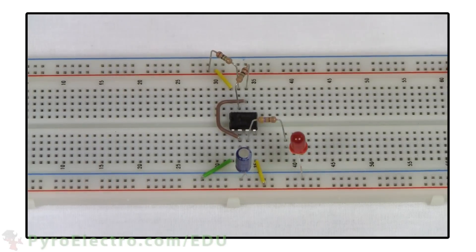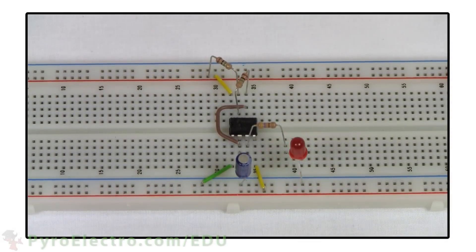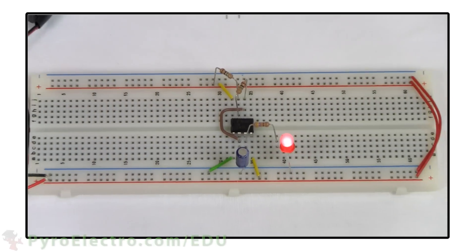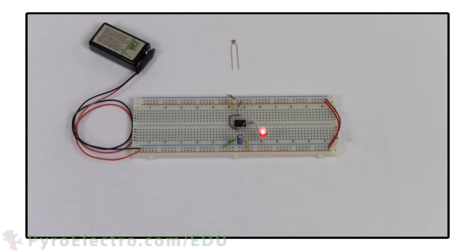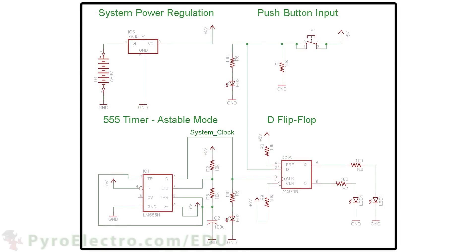The 555 timer's astable output that we saw in the Introduction to Modern Electronics course makes for a great clock for simple electronics like we want to build. So let's build up a 555 timer with astable output and use it as a clock signal for going into a D flip-flop. Here's the schematic of the circuit we're going to build.